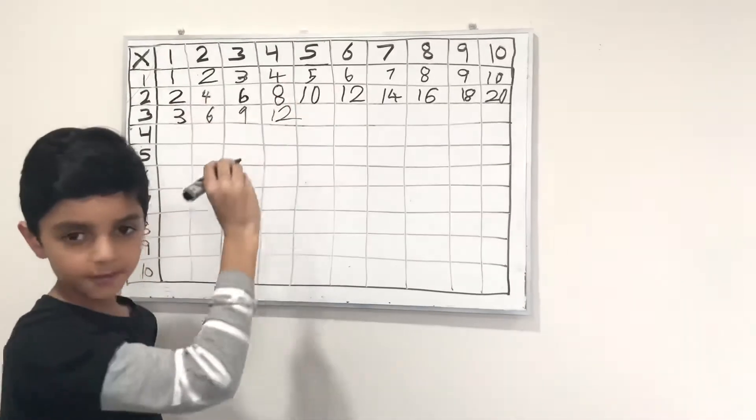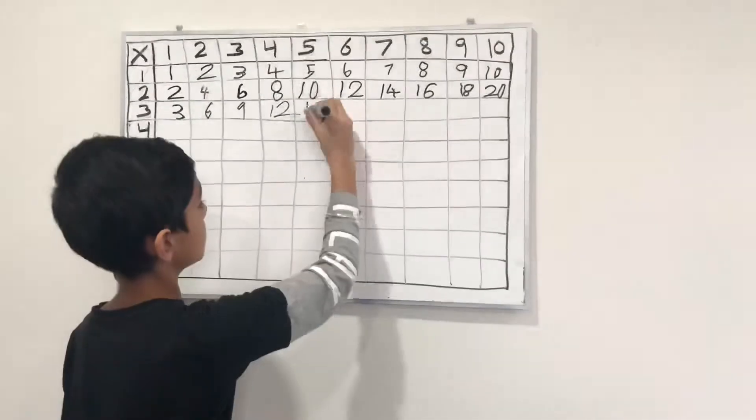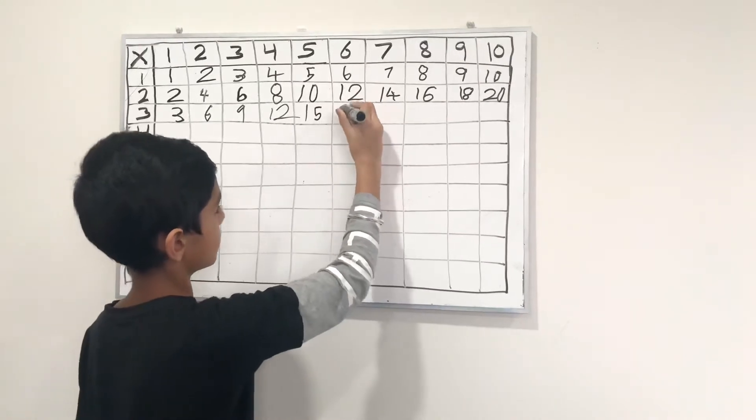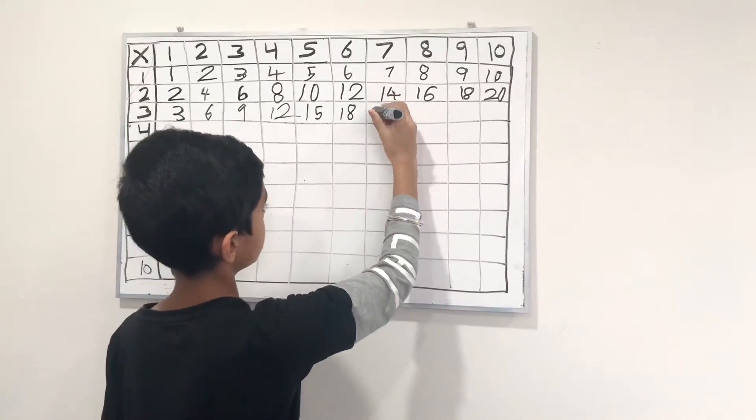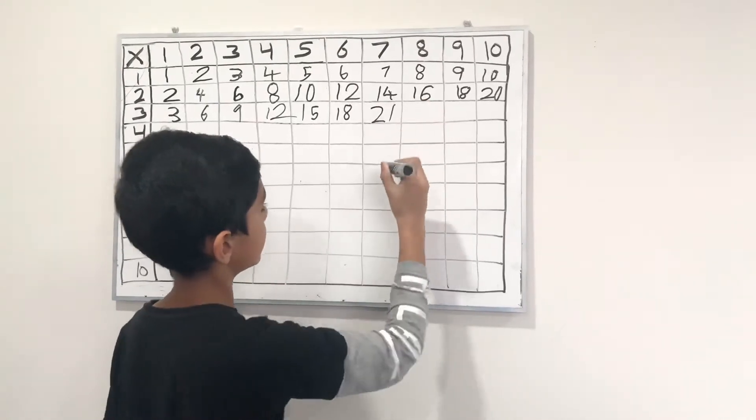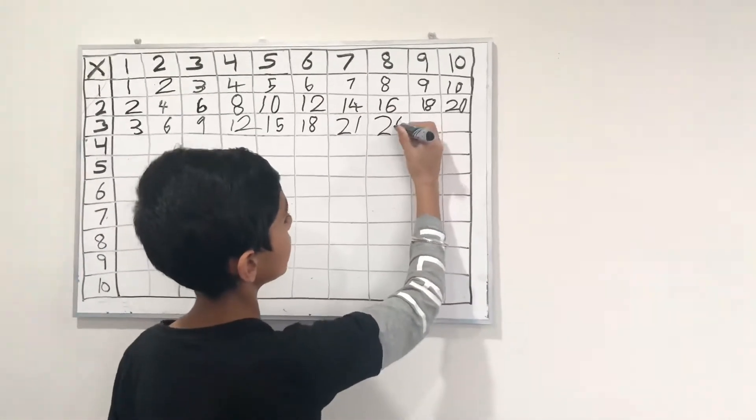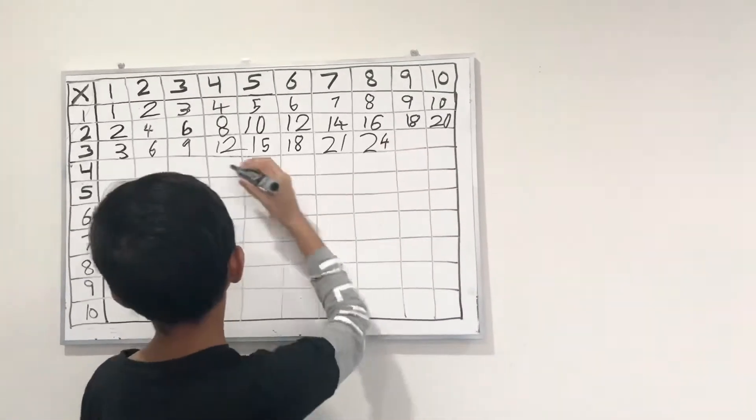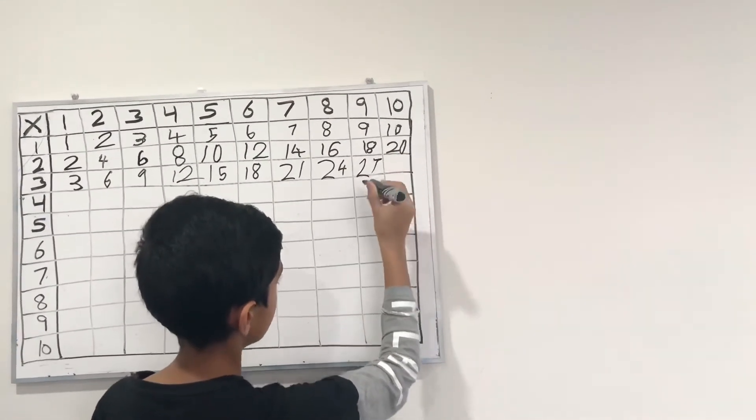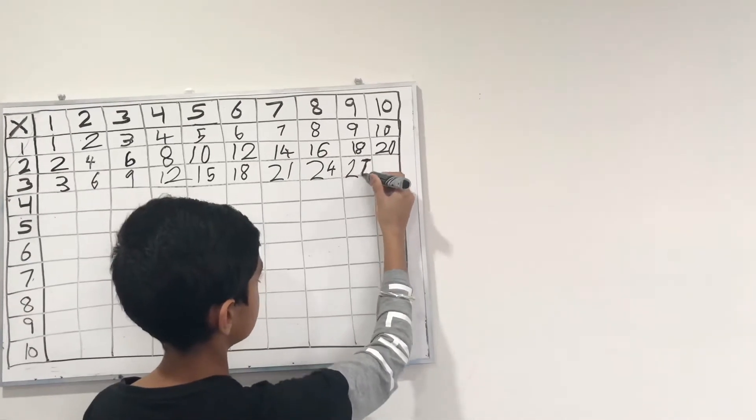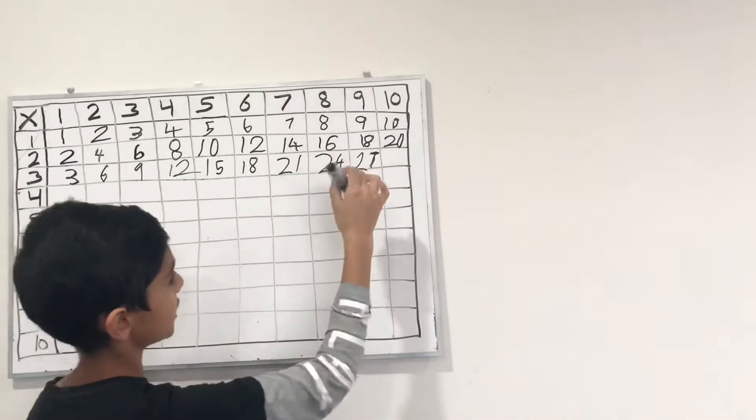3 times 5 is 15, 3 times 6 is 18, 3 times 7 is 21, 3 times 8 is 24, 3 times 9 is 27, and lastly, 3 times 10 is 30.